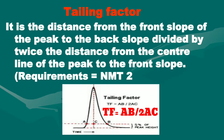Next is tailing factor. It is the distance from the front slope of the peak to the back slope, divided by twice the distance from the center line of the peak to the front slope. The tailing factor should be not more than two. In this figure, you can easily understand how to calculate the tailing factor of any peak in a chromatogram in HPLC.